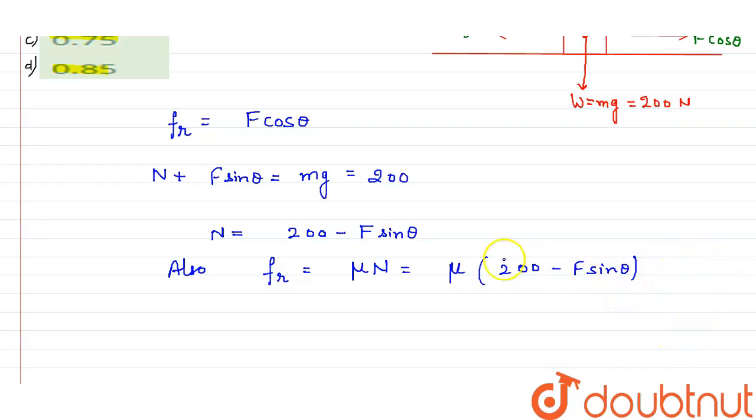So from this point, and we know that F_R is my F cos theta, so we can write it here: F_R is nothing but equals to F cos theta, equals to μ of 200 minus F sin theta.